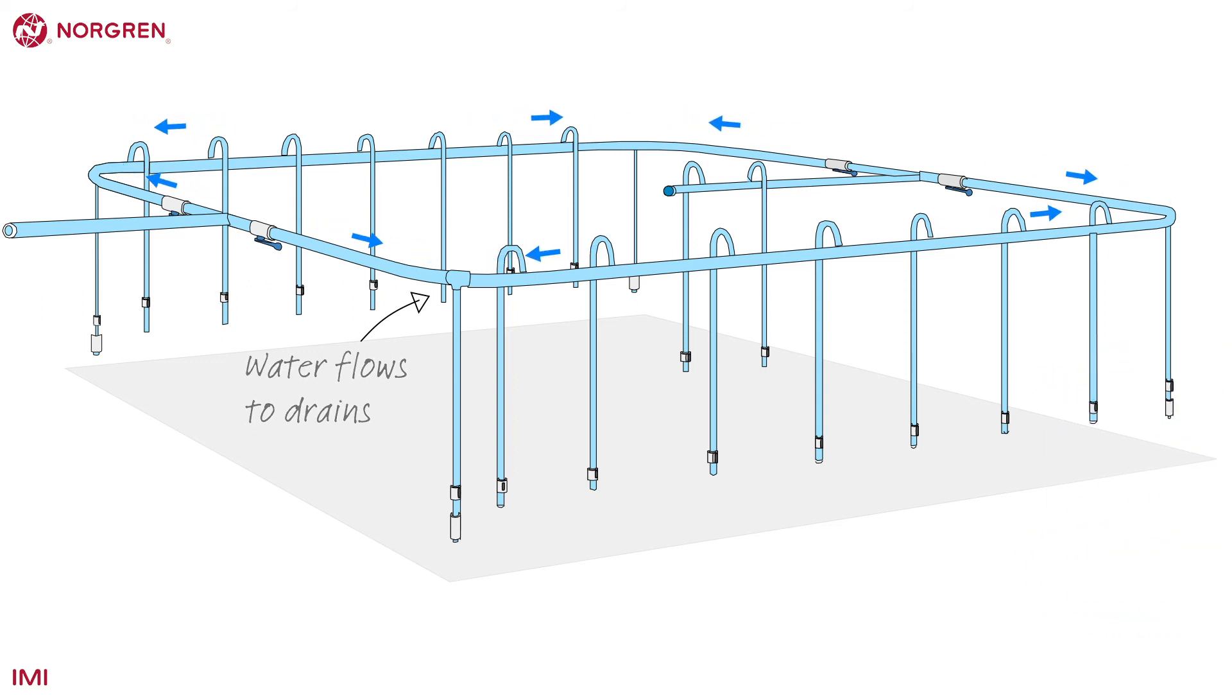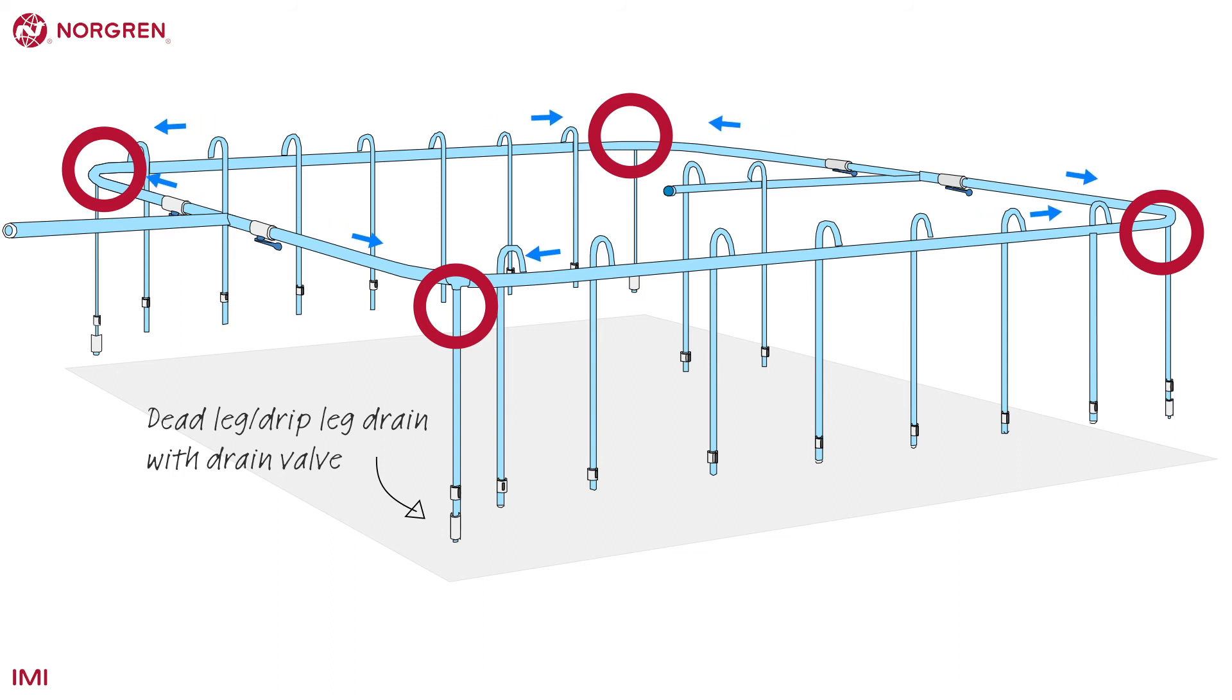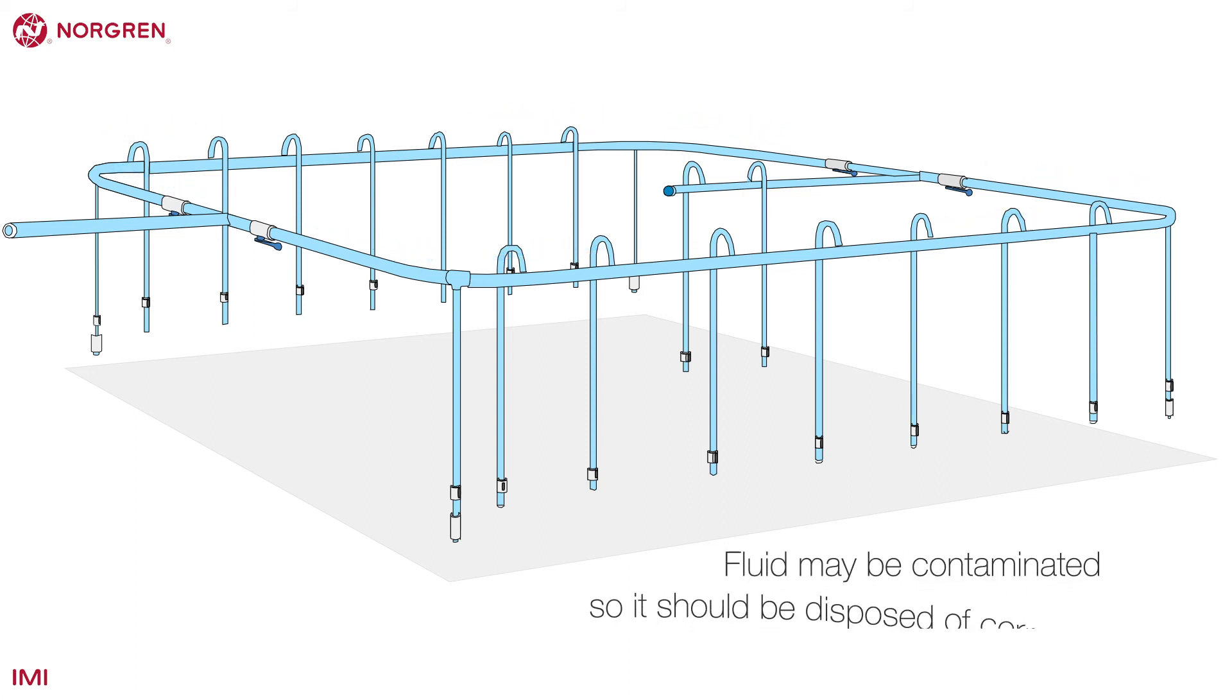IMI Norgren supply dead leg drains. These valves are below each corner and allow the fluid to be drained and a shut-off valve should be included above them to allow for servicing. Fluid may be contaminated so it should be disposed of correctly.